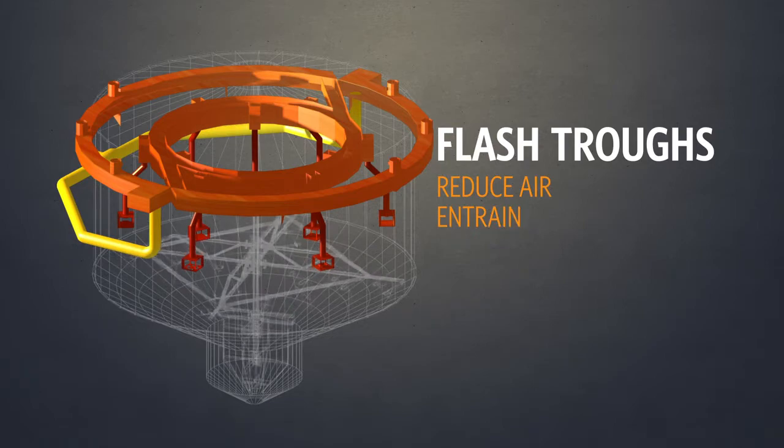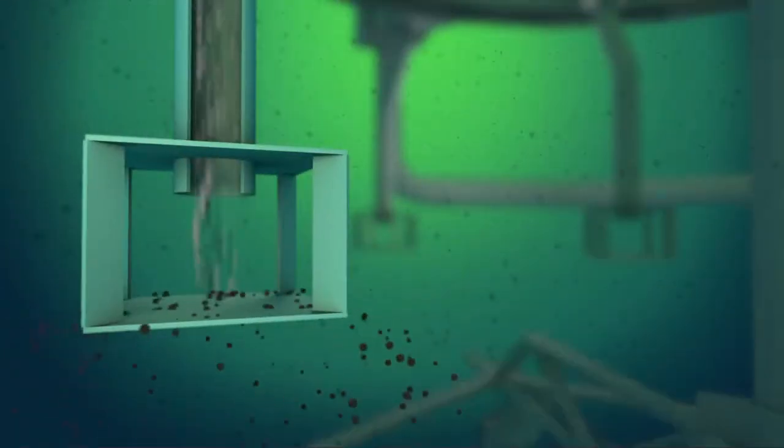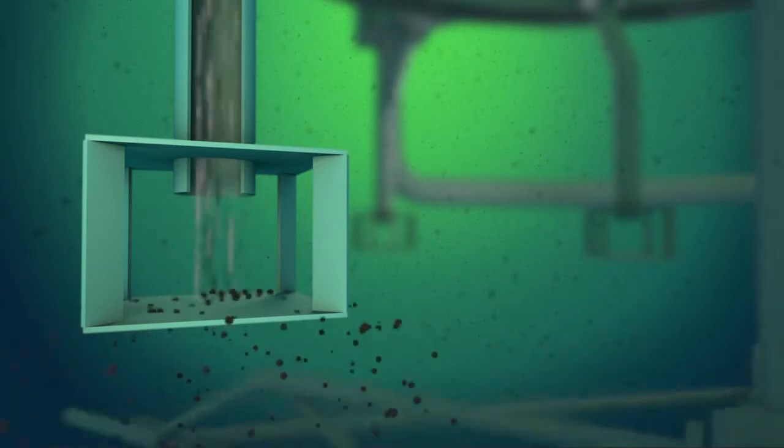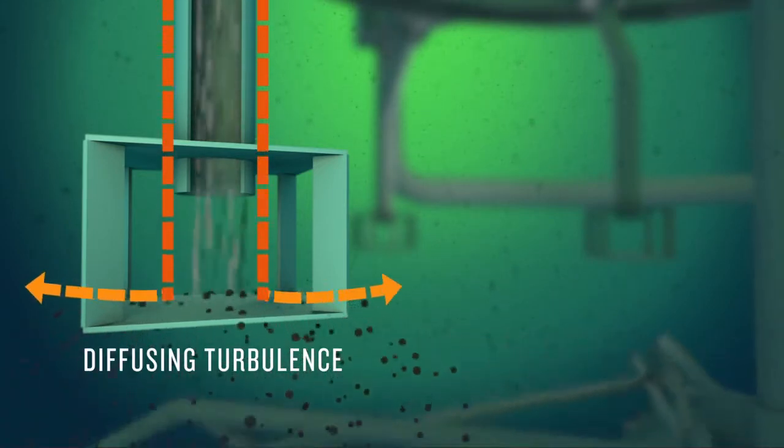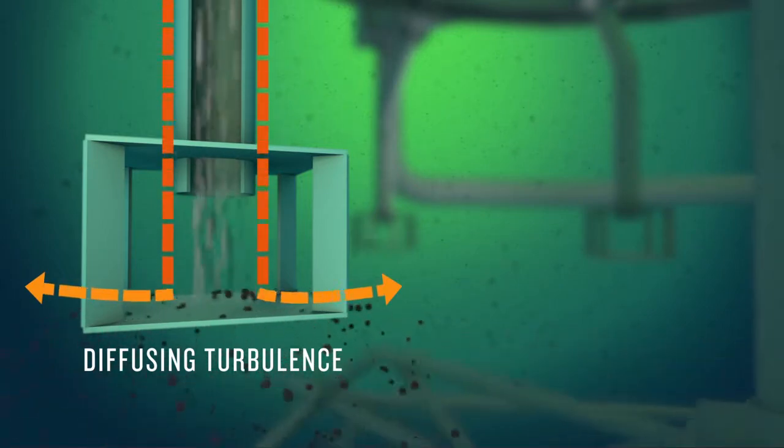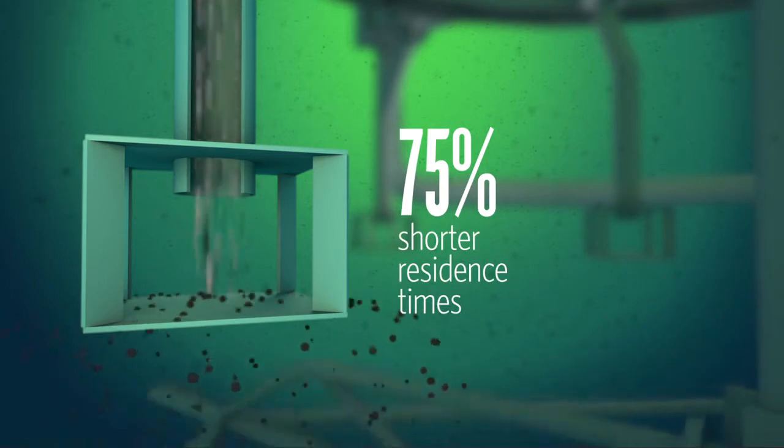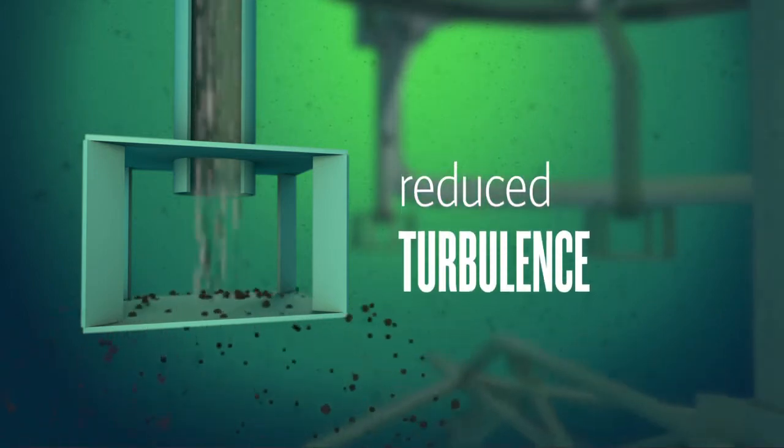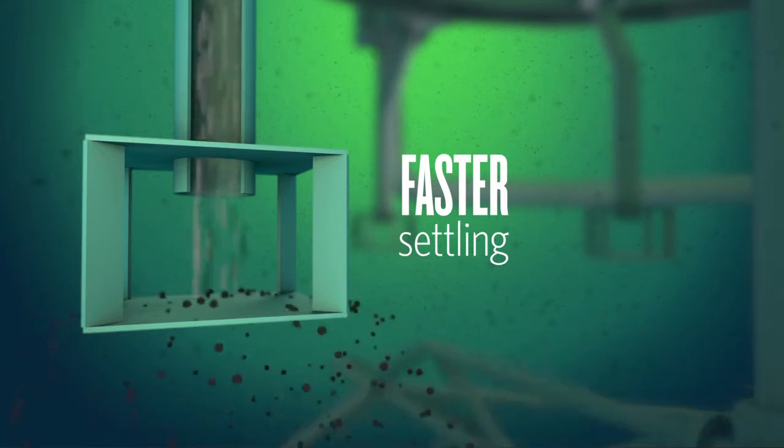The patented turbulence reduction device is designed to introduce high volume into the tank while diffusing turbulence, which can shorten residence times by as much as 75%. Reduced turbulence and faster settling time leads to increased sugar production, as well as improved color and purity.